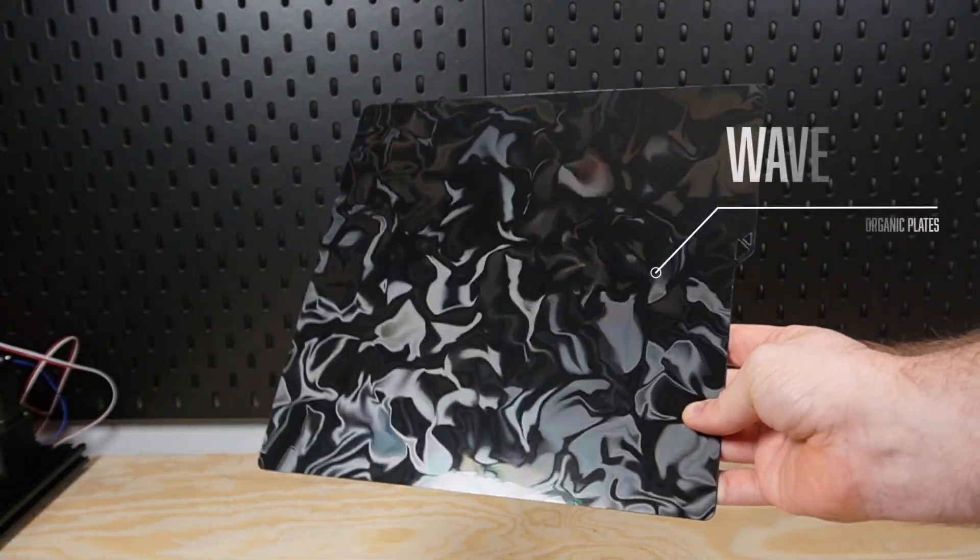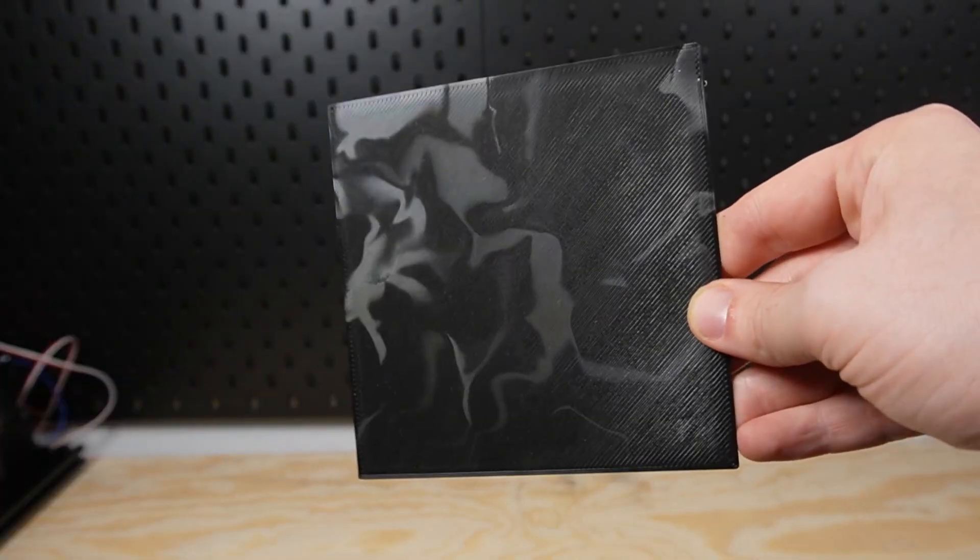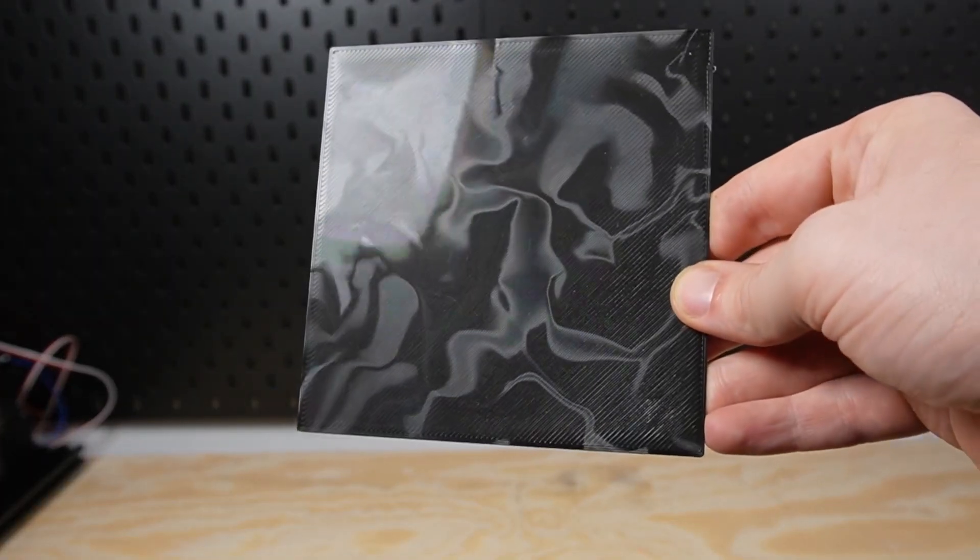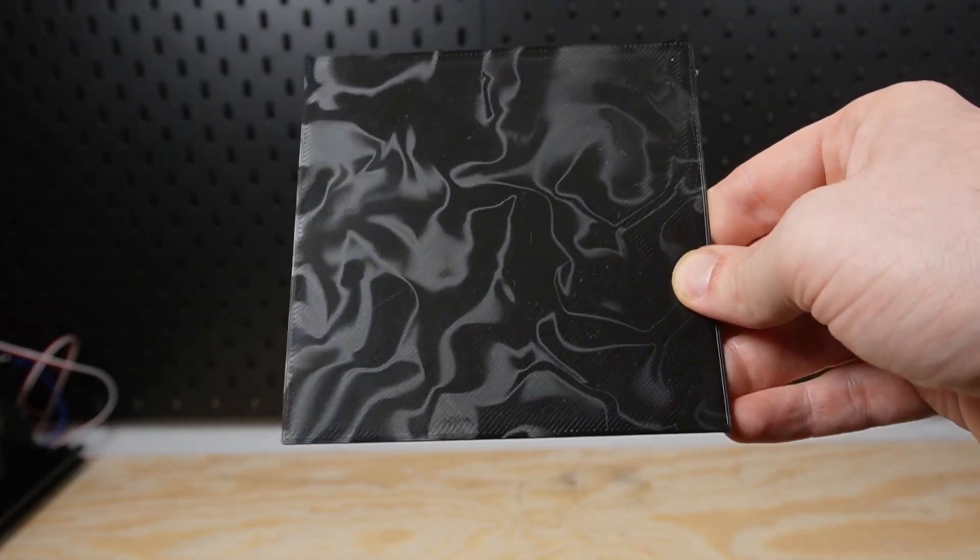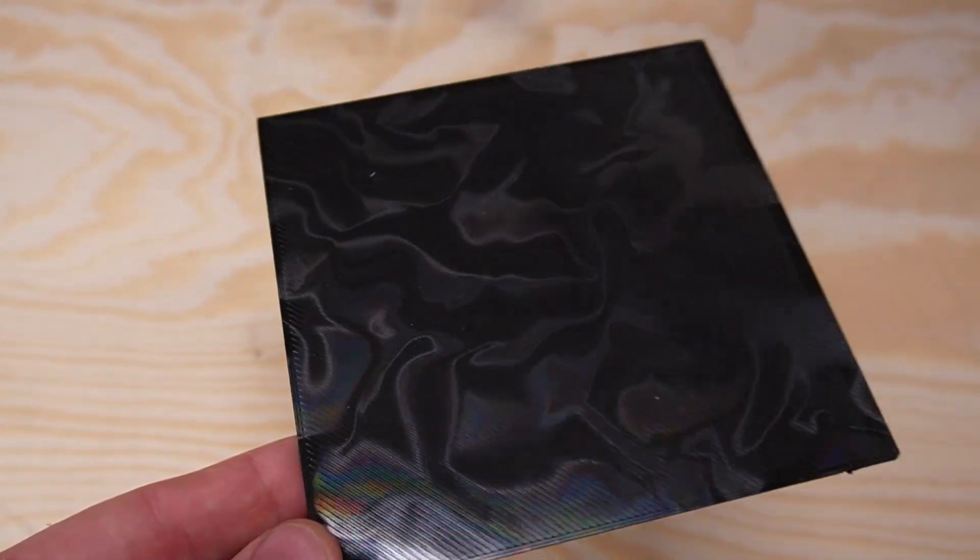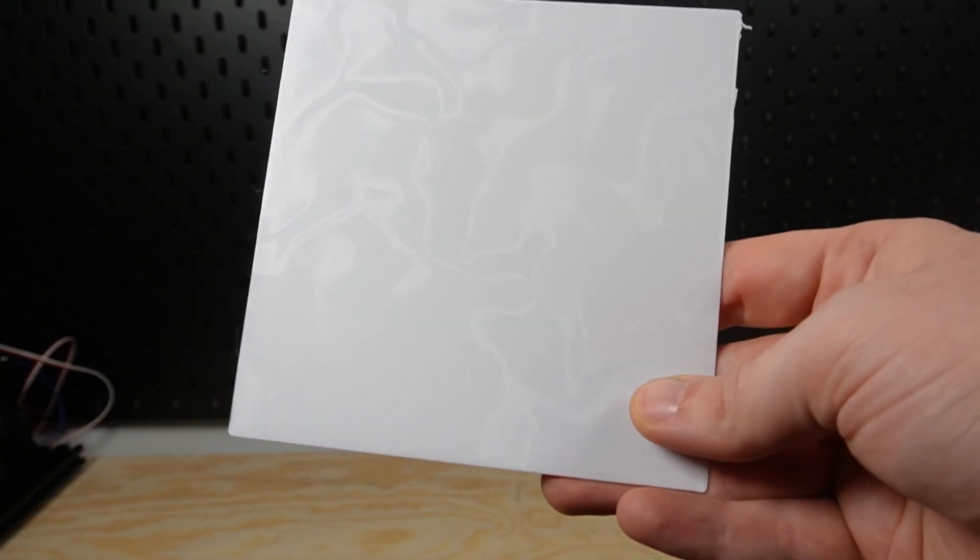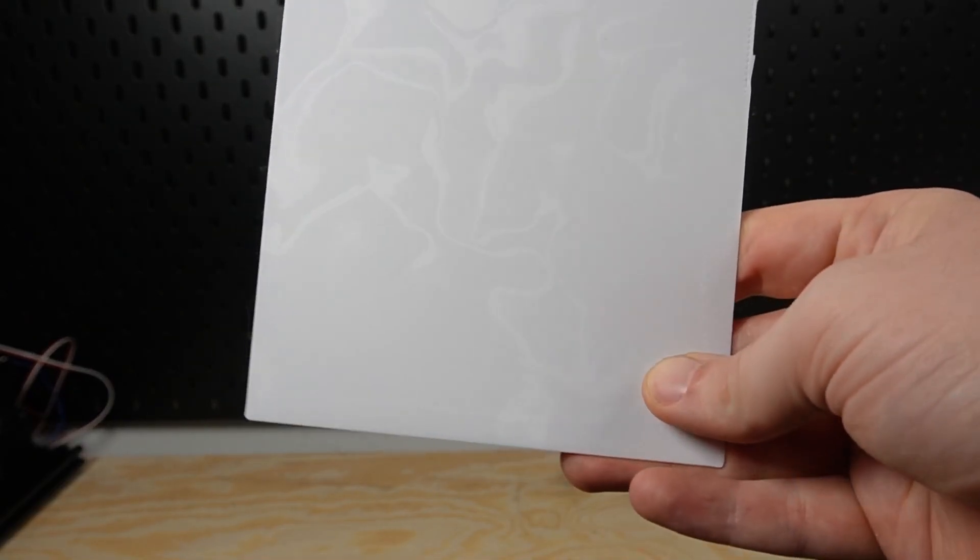This plate takes it a step further with deeper chaotic curves that create a dramatic liquid metal effect. Under the light, the print looks almost fluid and every movement of the viewer changes the reflection. This wave smooth plate is ideal for... well, honestly, we have no idea what to use this for. It just looks totally wild.